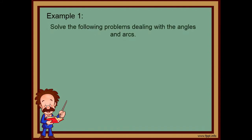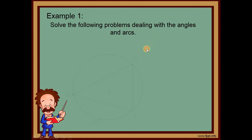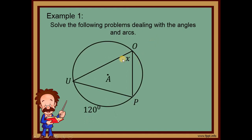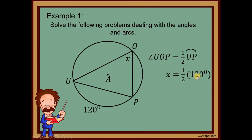Example number 1: solve for X. Angle UOP is an inscribed angle, and its intercepted arc is arc UP. By the inscribed angle theorem, angle UOP equals half of arc UP. Our angle is X and arc UP is 120 degrees, so X equals half of 120, which is 60 degrees. Ganun lang kasimple — when the vertex is on the circle itself (not at the center), it's an inscribed angle.